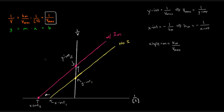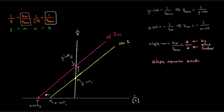The slope of the Lineweaver-Burk plot is KM over Vmax. Since KM decreased by a factor of 2 and Vmax also decreased by a factor of 2, and because they're both decreasing by the same factor, the slope doesn't change — it remains unchanged. So these lines are parallel: they have different intercepts but the same slope. The inhibited reaction is just shifted up on the y-intercept and to the left on the x-intercept, but the slopes are identical.